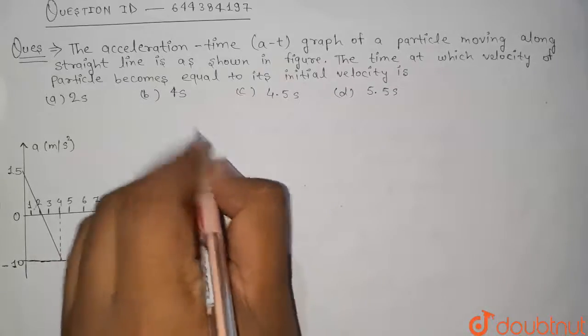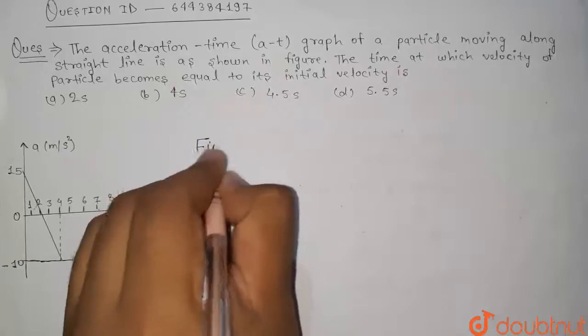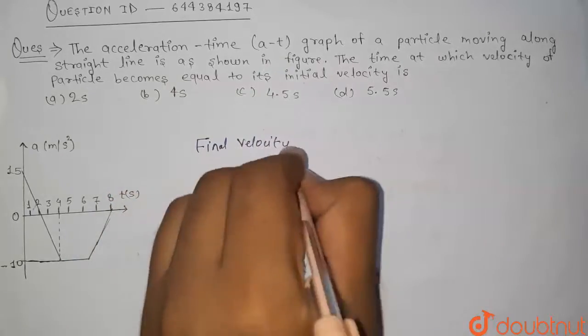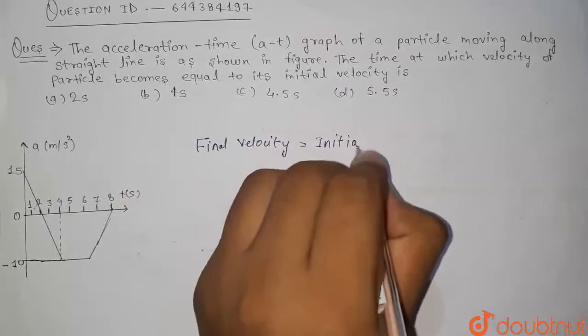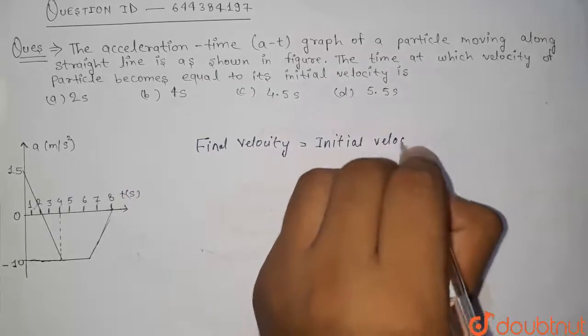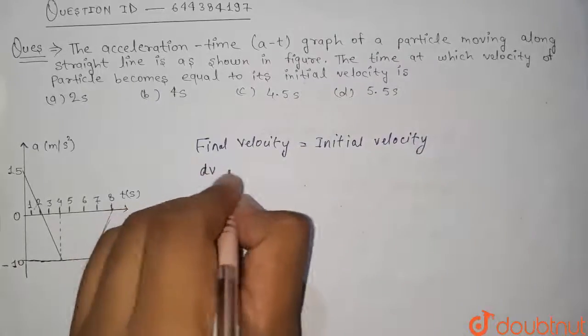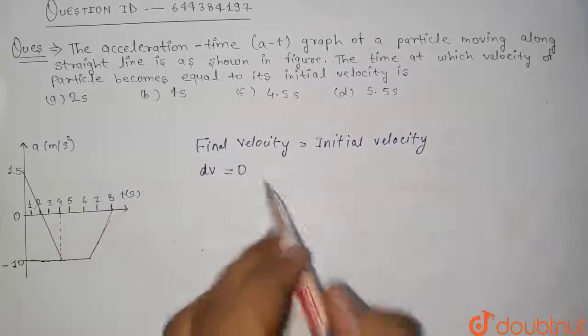If final velocity will be equal to initial velocity, then we can say that change in velocity, that is dv, will be equal to 0 because both velocities should be equal.